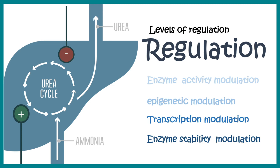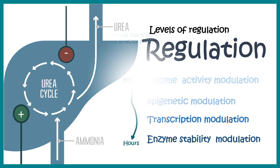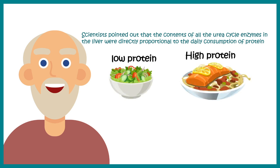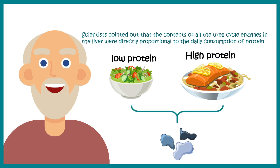All of these strategies could be used in combination to regulate a biochemical pathway, and they range from several minutes to several hours. For the urea cycle specifically, scientists pointed out that the levels of urea cycle enzymes in the liver were directly proportional to the daily consumption of protein. An individual consuming a low-protein diet versus a high-protein diet would have very different enzyme levels and activities.